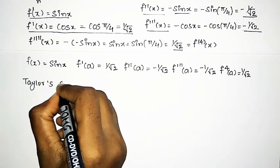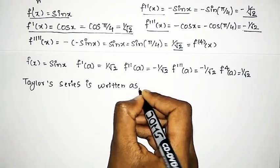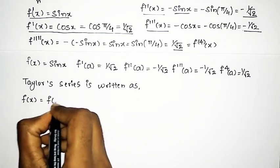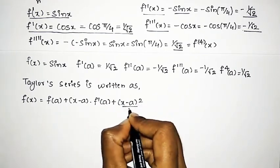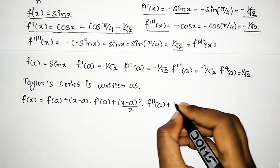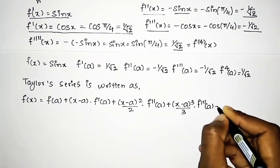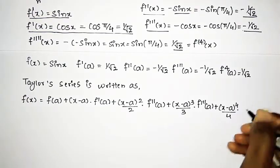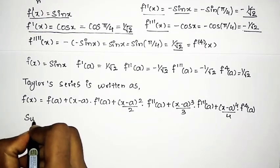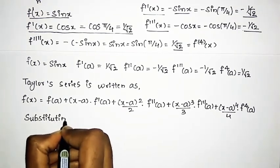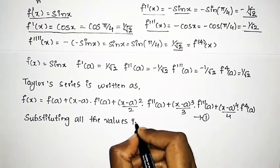Now, writing the Taylor series up to the fourth term: f(x) = f(a) + (x - a)·f'(a) + (x - a)²/2·f''(a) + (x - a)³/3·f'''(a) + (x - a)⁴/4·f''''(a). We need to substitute all the values into this equation — call it equation (1).